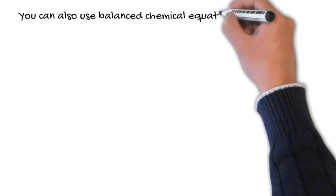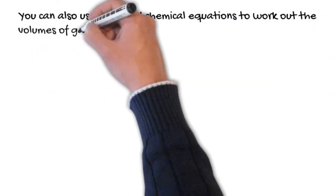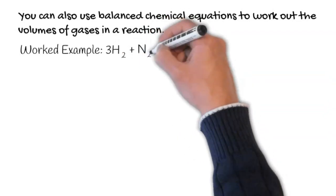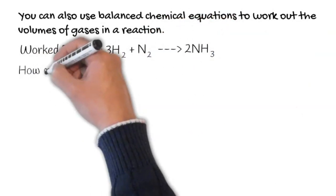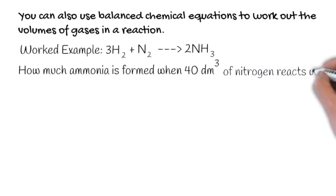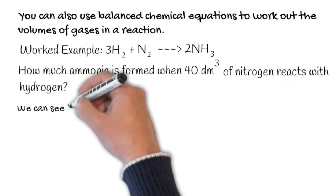You can also use a balanced chemical equation to work out the volume of gas in a reaction. Let's go for a worked example. Here we have three hydrogen reacting with nitrogen to form ammonia. How much ammonia is formed when 40 decimeters cubed of nitrogen reacts with hydrogen?